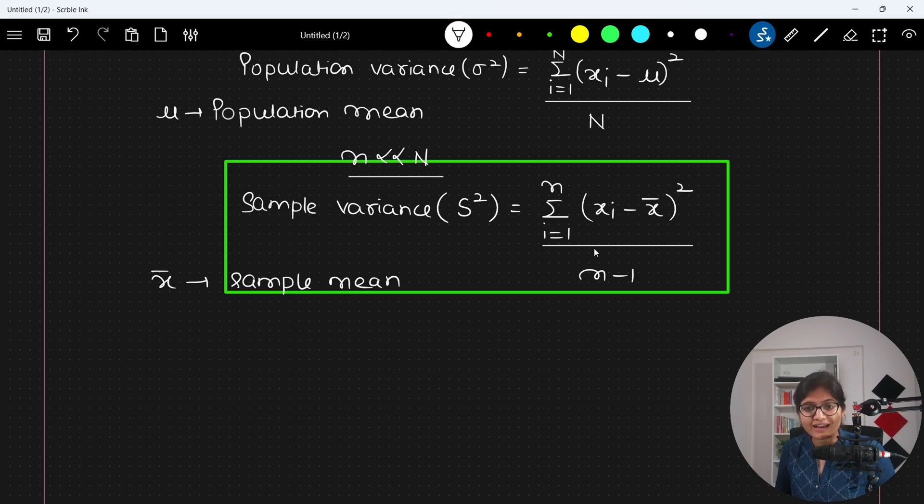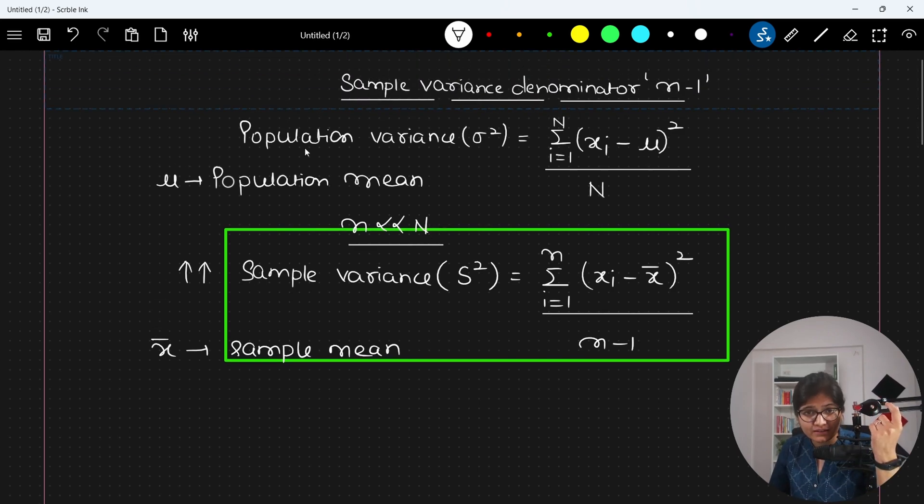So here if you will observe, when I will be having a lesser number, N minus 1 is a lower number as comparable to N. In that case, I will be having a higher value of sample variance, which gives me a quite approximate value with respect to the population variance.